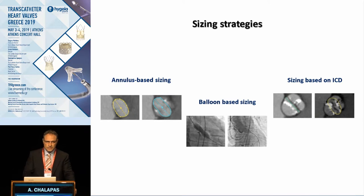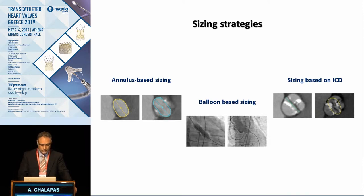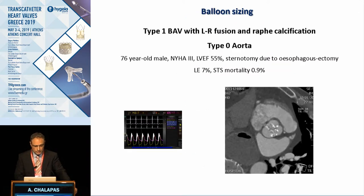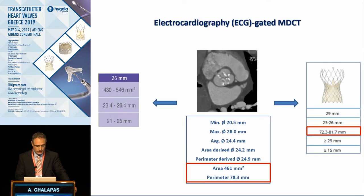CT analysis provides a great deal of information and there are different sizing strategies. We have the balloon-based sizing strategy and the annulus-based sizing strategy. From CT we take information at different levels of the aortic root and can proceed with sizing based on the intercommissural diameter four millimeters above the level of the annulus. When sizing based on the annulus, we need some degree of oversizing, which must be less than 7–10%, and this is especially important for balloon-expandable valves.